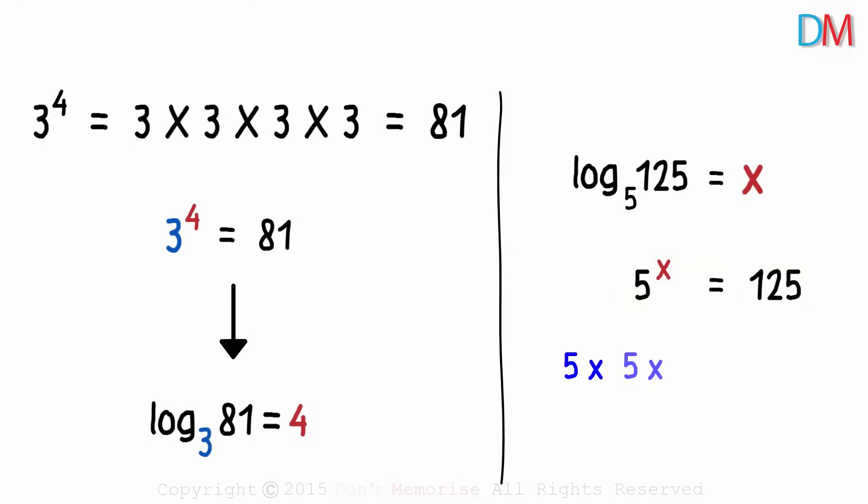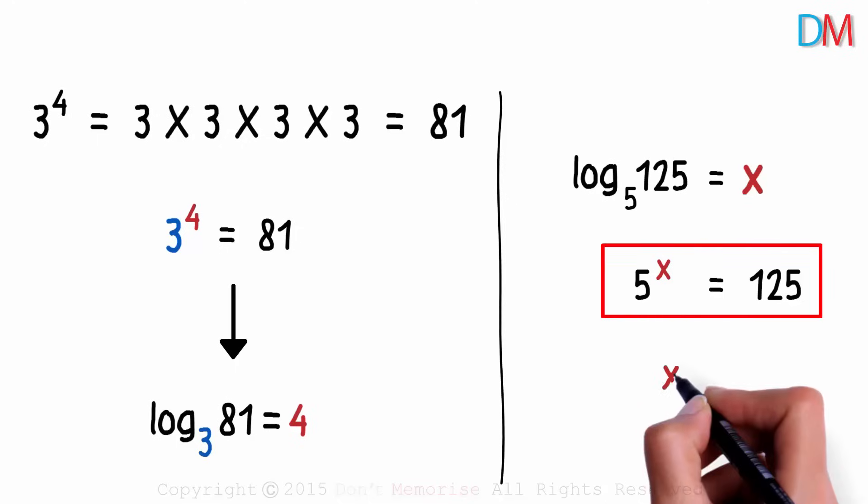We know that 5 times 5 times 5 is 125. So 5 to the power 3 will equal 125. It gives us the value of x as 3.